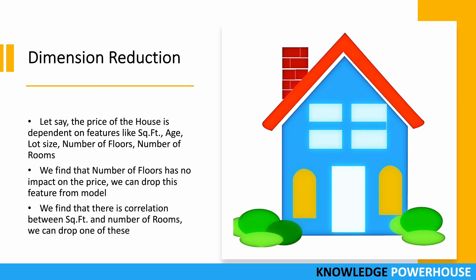Whether it's a single-storey or double-storey house, all that matters is square feet. So we can drop the number of floors feature from the model since it has no impact. We may also find a correlation between square feet and number of rooms — both have the same impact — so we only need to pick one of them. We can drop one of these redundant features to make our calculation much easier.